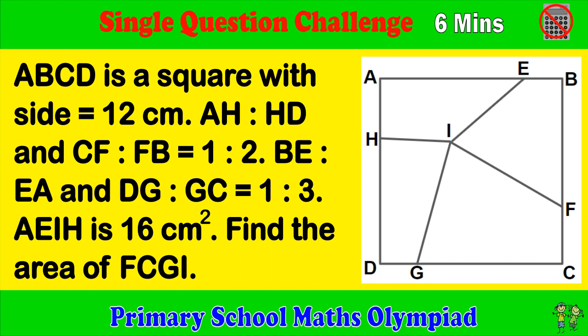ABCD is a square with side equals 12 cm. AH to HD and CF to FB equals 1 to 2. BE to EA and DG to GC equals 1 to 3.